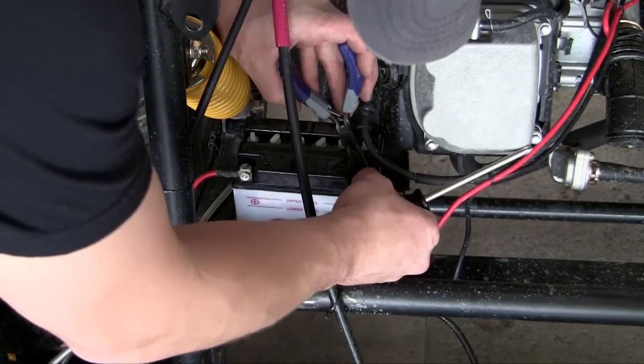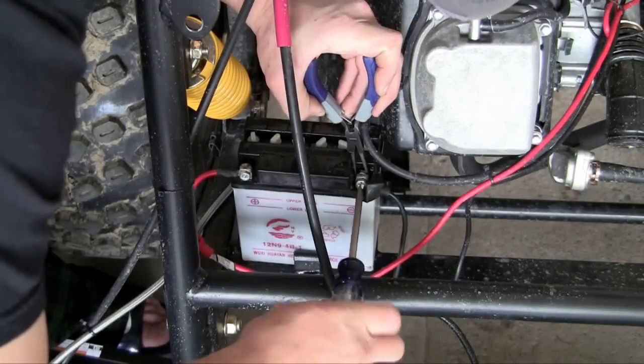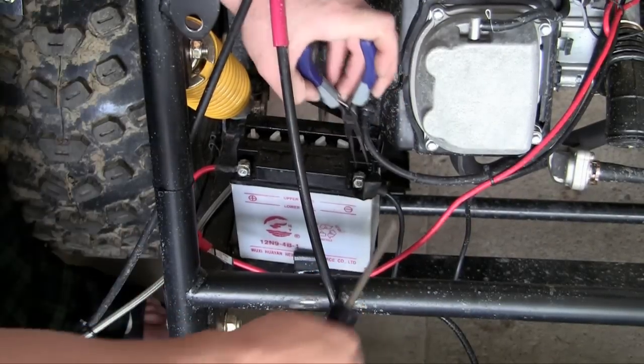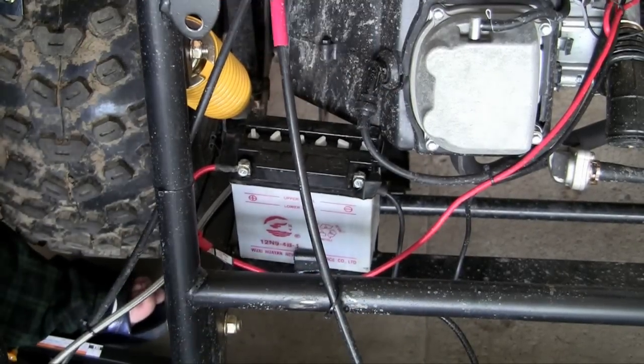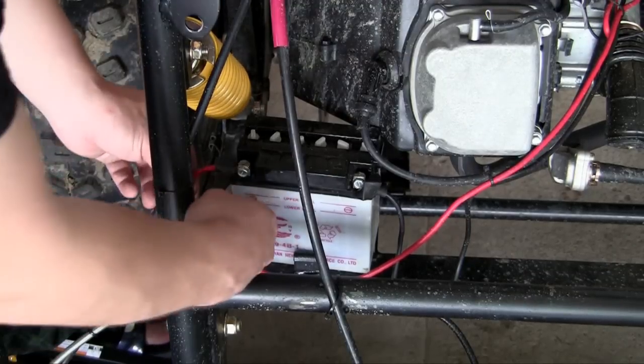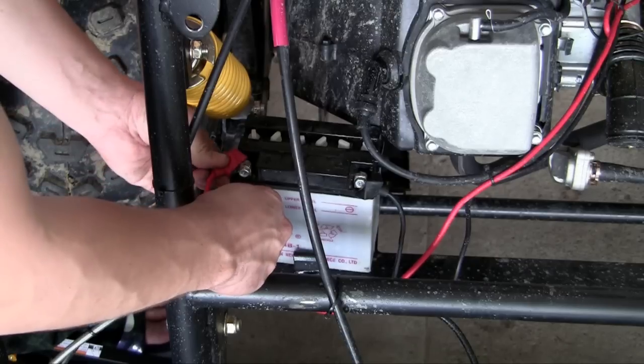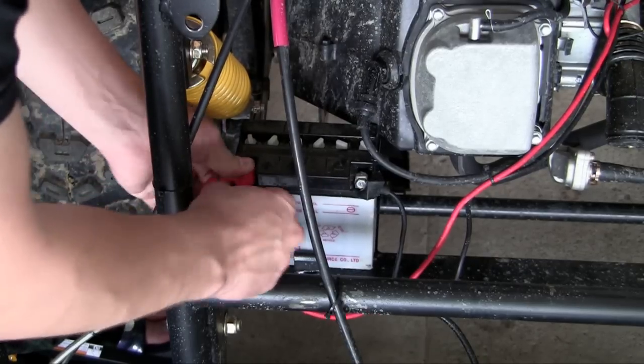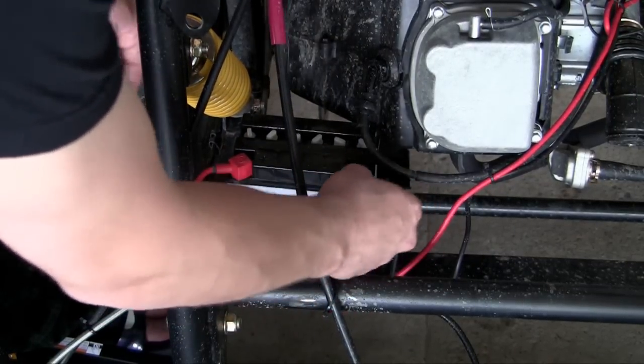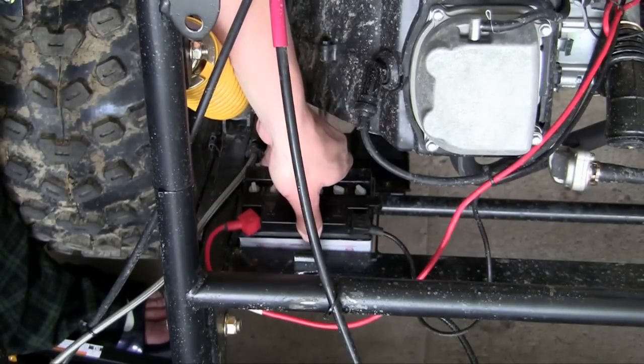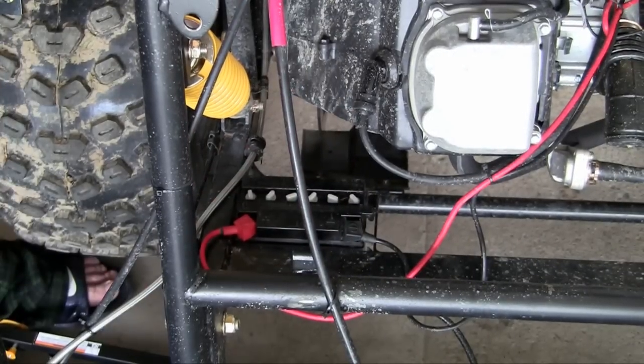There we go. There we go. The negative and positive are both tightly connected. Now all you have to do is slide your battery covers over the terminal, positive and negative. Place this baby into its bracket, into its home where it belongs, and your battery is now hooked up and good to go. See you later.